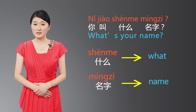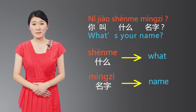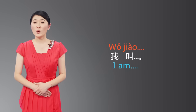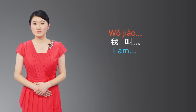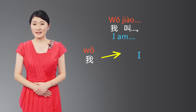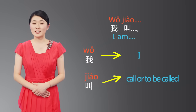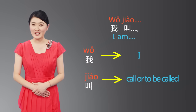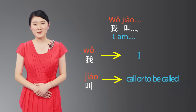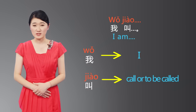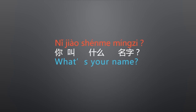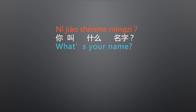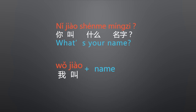The response to 你叫什么名字 is 我叫 followed by your name. 我 is 'I,' and 叫 again means 'call' or 'to be called' — so 我叫安娜 means 'My name is Anna.' Pay attention to the word order: in Chinese, the word order for questions is the same as for statements.